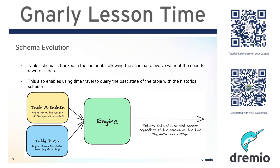What happened is that the schema was just in the files. Basically, in older versions of data lake tables, it was just the files in your folder — that was the table. So basically, if you wanted to change the schema, to change the data type of a particular column or the name of a particular column, what you'd have to do is pretty much rewrite all the files.